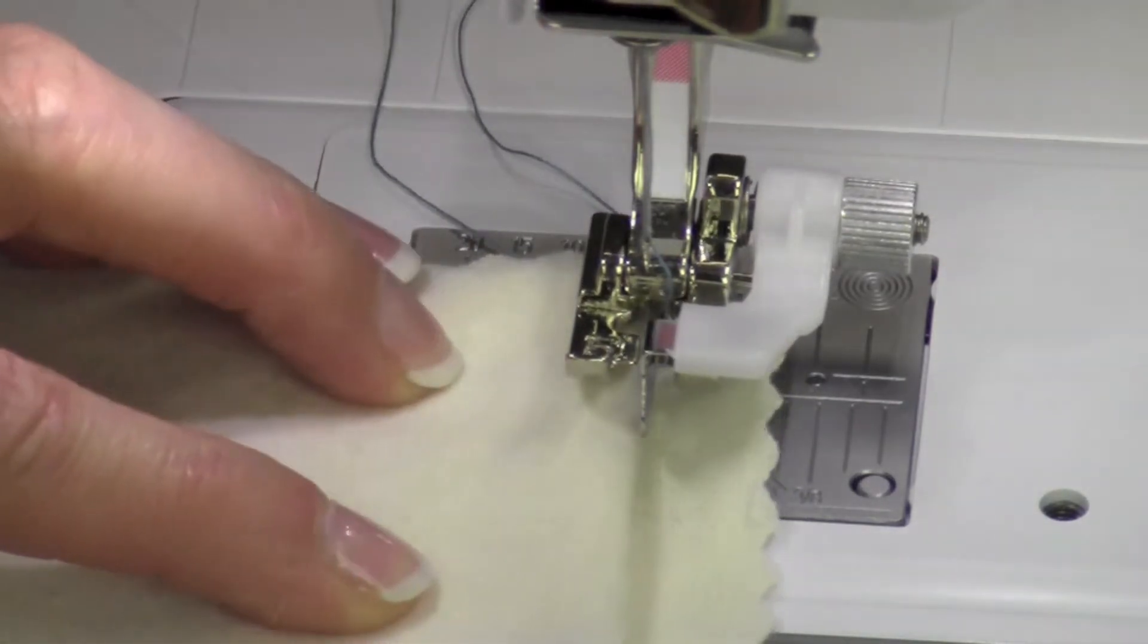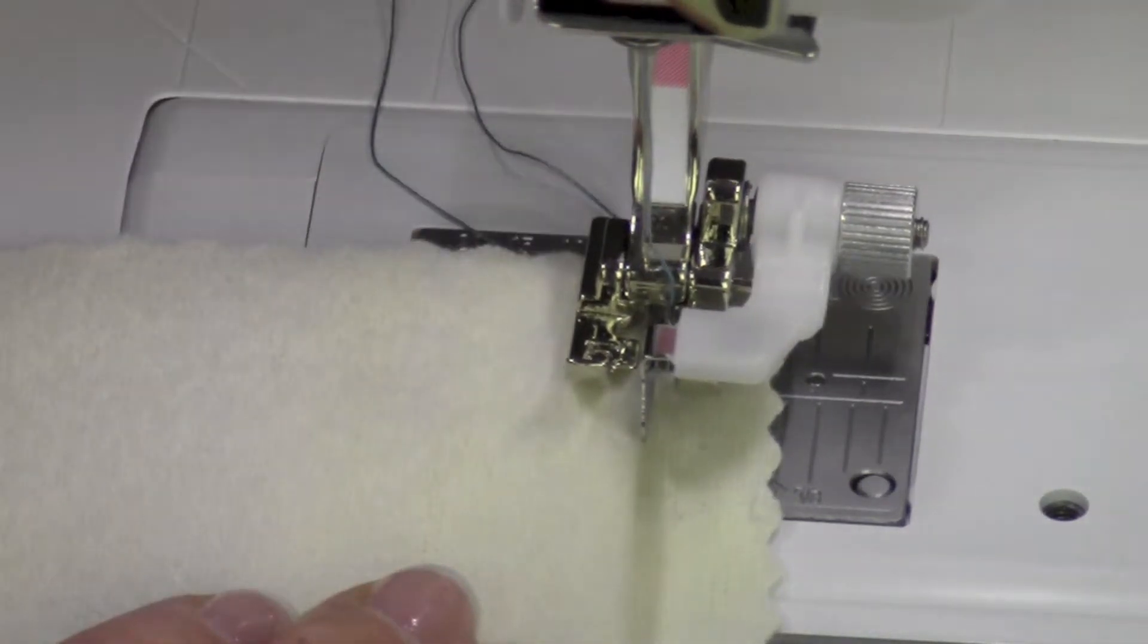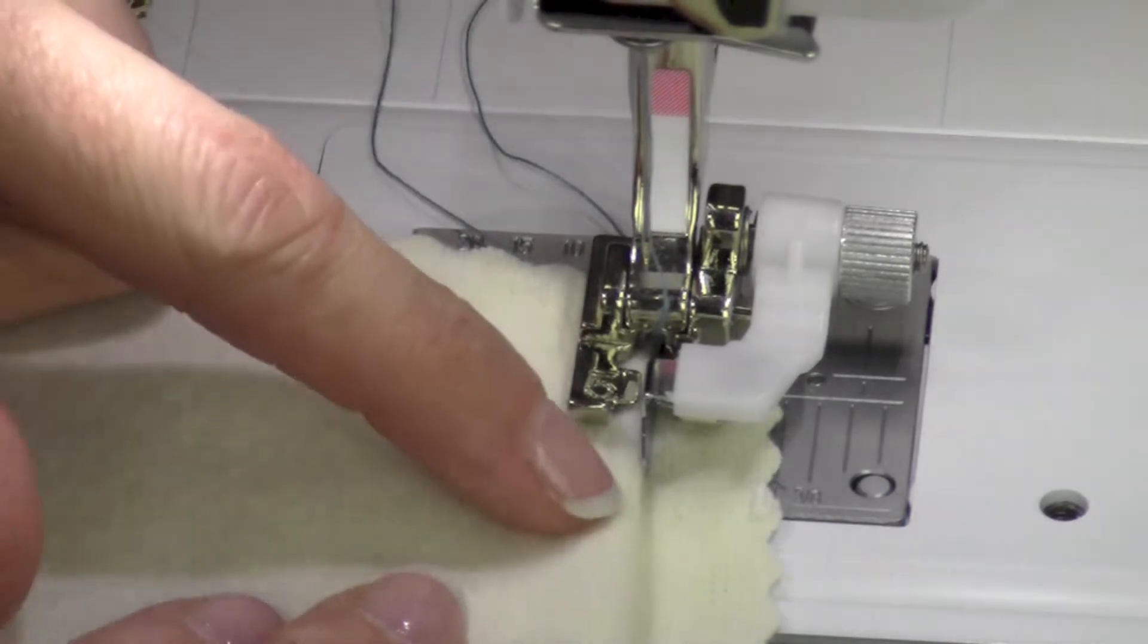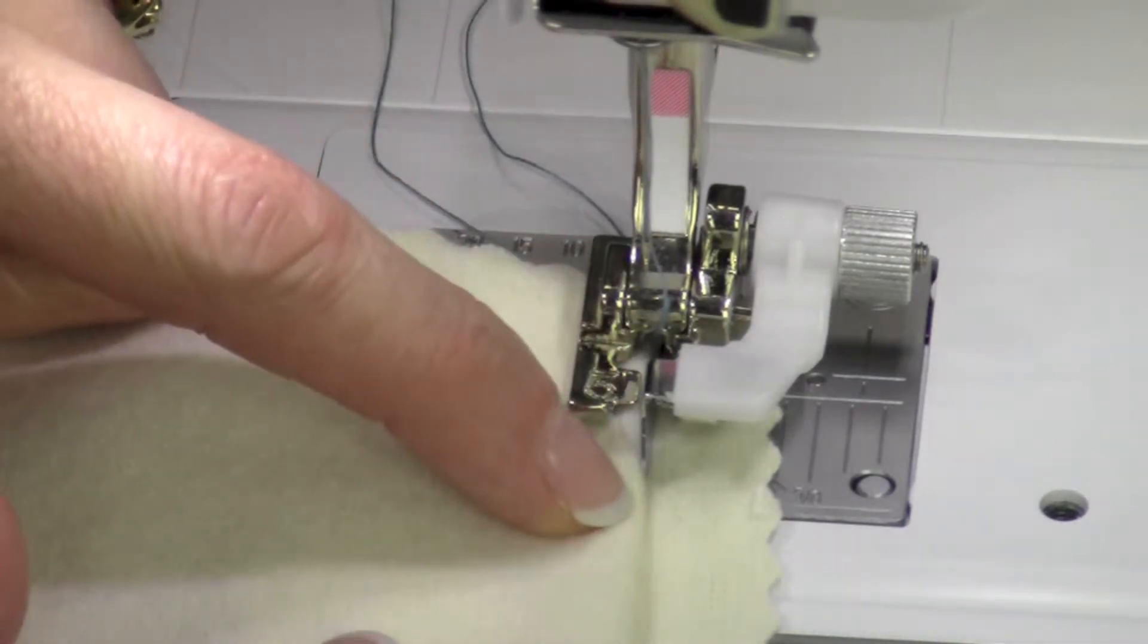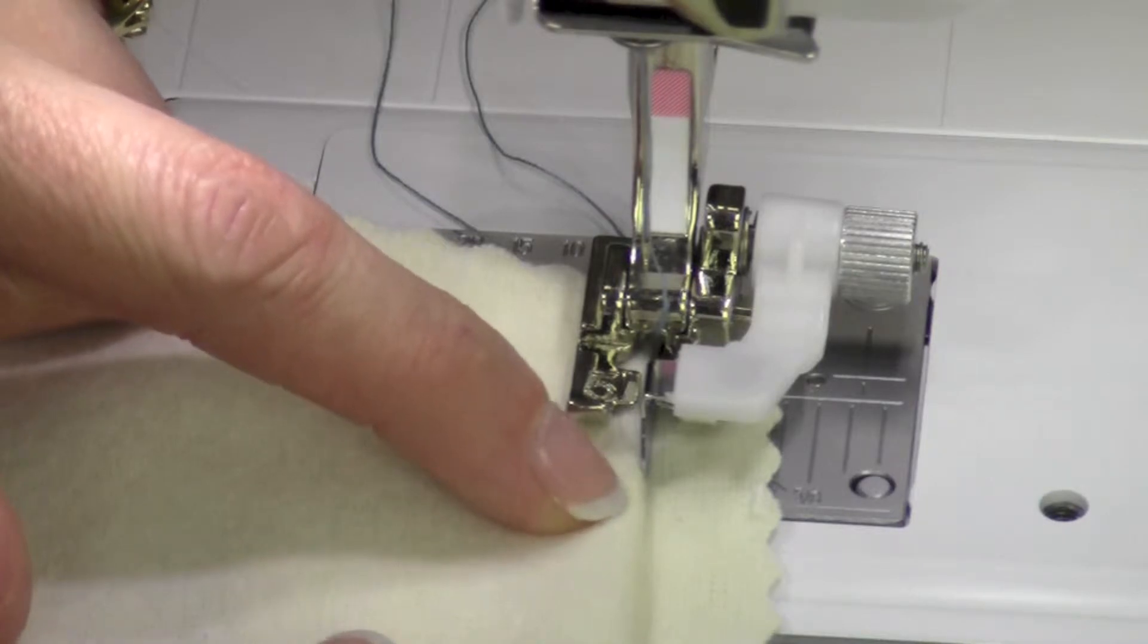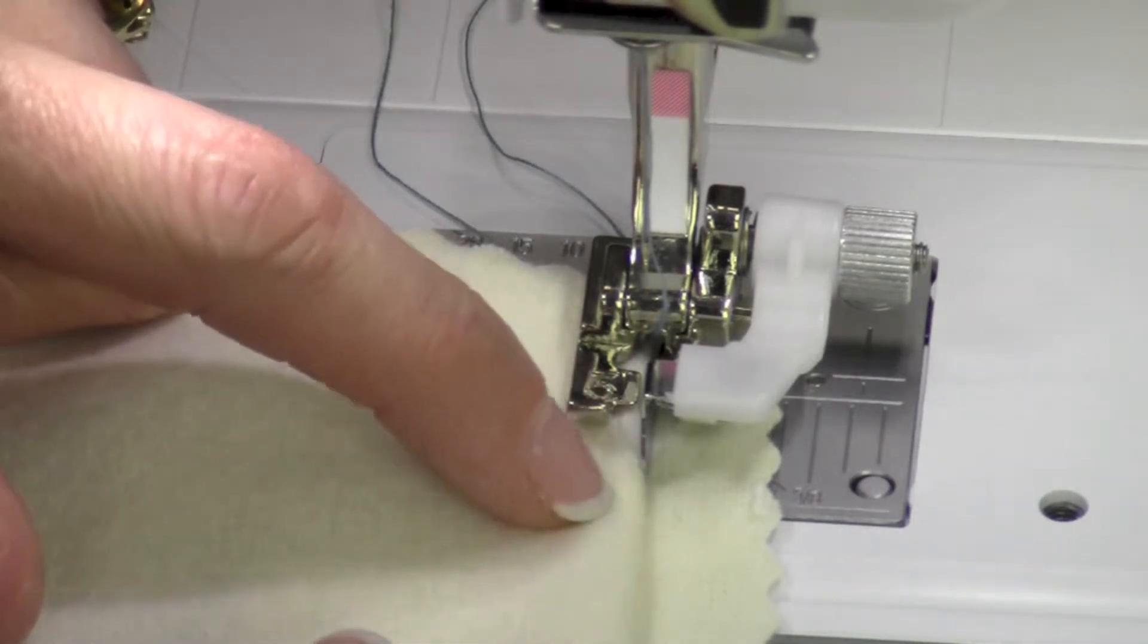When you set up this stitch, the very first stitch it's set to do, the needle is hovering already over the left side. It is wanting to be positioned so it goes right down into the fold of the fabric.